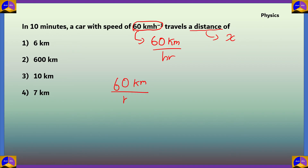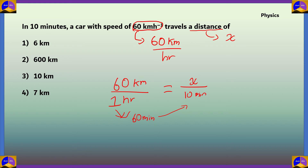We write: 60 km per 1 hour equals x per 10 minutes. Since 1 hour equals 60 minutes, to convert from 60 minutes to 10 minutes we divide by 6. To keep both fractions equal, we also divide the numerator by 6: 60 divided by 6 equals 10 km. So x, the distance traveled, is 10 km. Option 3, 10 km, is the correct answer.